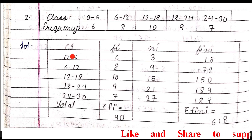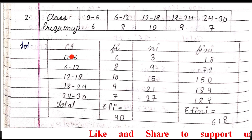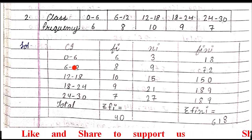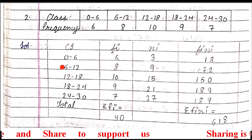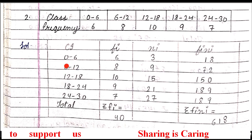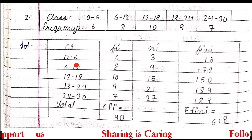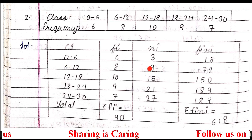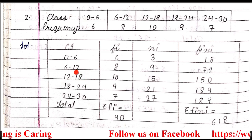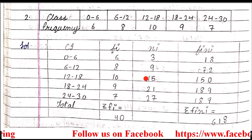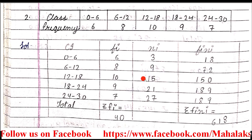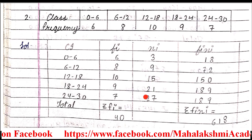Class mark equals upper limit plus lower limit upon 2. When we do 6 plus 0 upon 2, we get 3. In the same way, upper limit is 12 and lower limit is 6, so 12 plus 6 is 18, and 18 upon 2 gives us 9. In the same way for the next groups, the class marks we get are 15, 21, and 27.